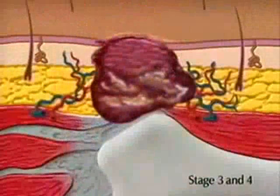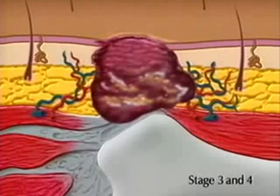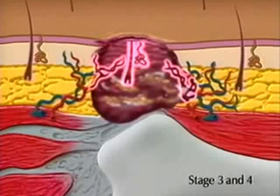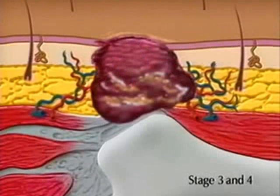Stage 3 and 4 pressure ulcers are full thickness wounds. In them, blood vessels are destroyed along with dermal appendages, such as hair follicles, sebaceous glands, and sweat glands.